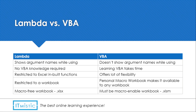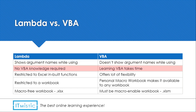Let us first have a quick look at the differences between Lambda and VBA. When we talk about Lambda, it shows argument names while using the function created through Lambda, whereas when we create a function using VBA we don't see any arguments with the function name. So using a Lambda function is a bit easier — it is more helpful when you can see the arguments that need to be passed. In VBA you need to remember the arguments or document them.